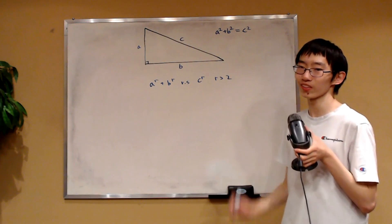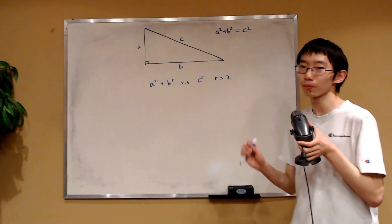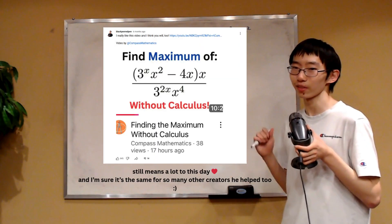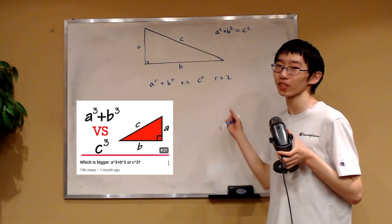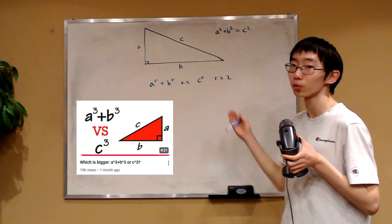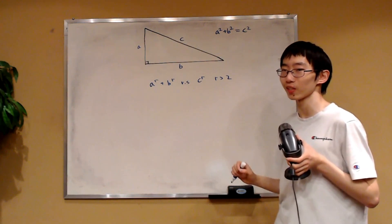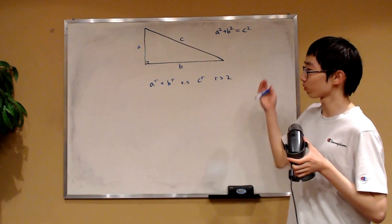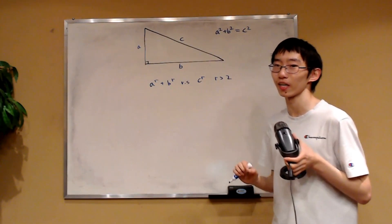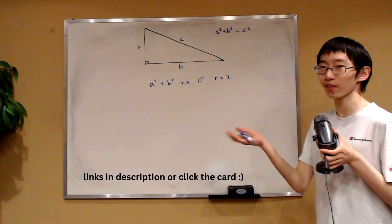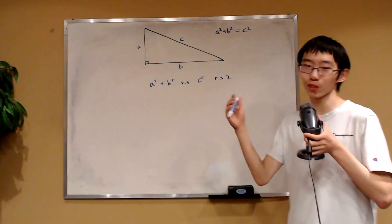Before we get into it, I do want to say that this video is inspired by BlackPenRedPen. He's a phenomenal math YouTuber who helps many small channels grow by promoting them, including me. He made a video that was basically the fuel for this video — essentially, he compared the values of a cubed plus b cubed and c cubed, which is the case when r is equal to 3. That's a super cool idea, and I'm going to generalize that result in this video. You should definitely go check him out and check out the video he made.